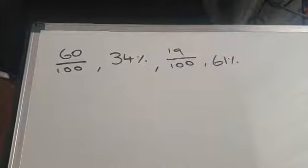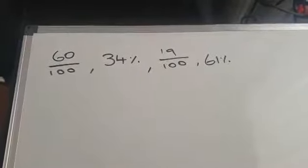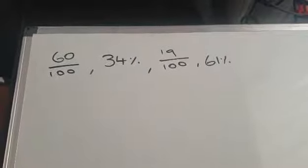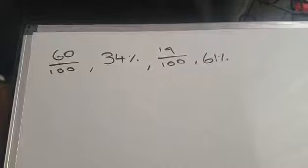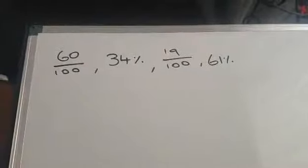Well, 34 percent and 61 percent are already in percentage form, but 60 over 100 and 19 over 100, if you remember from the very first slide, are really just 60% and 19%.